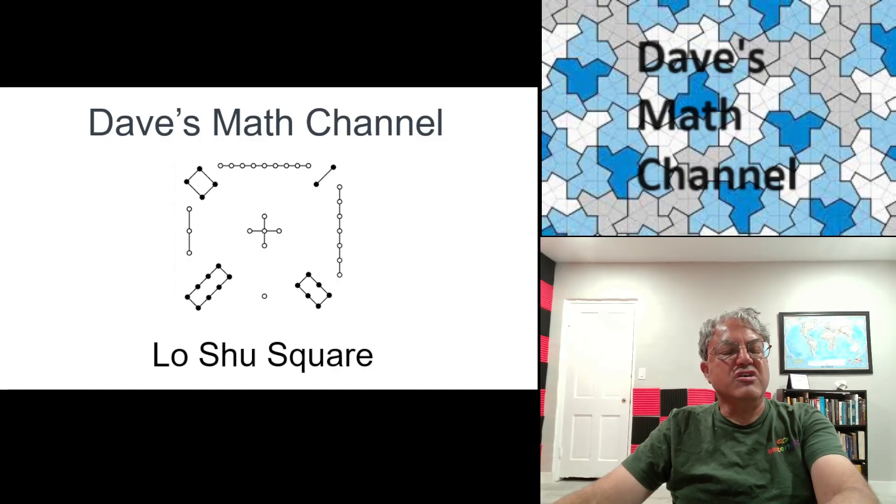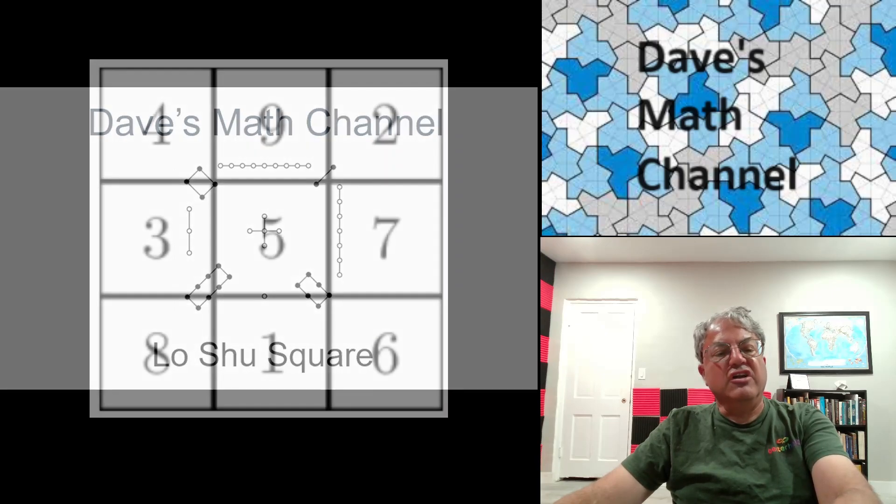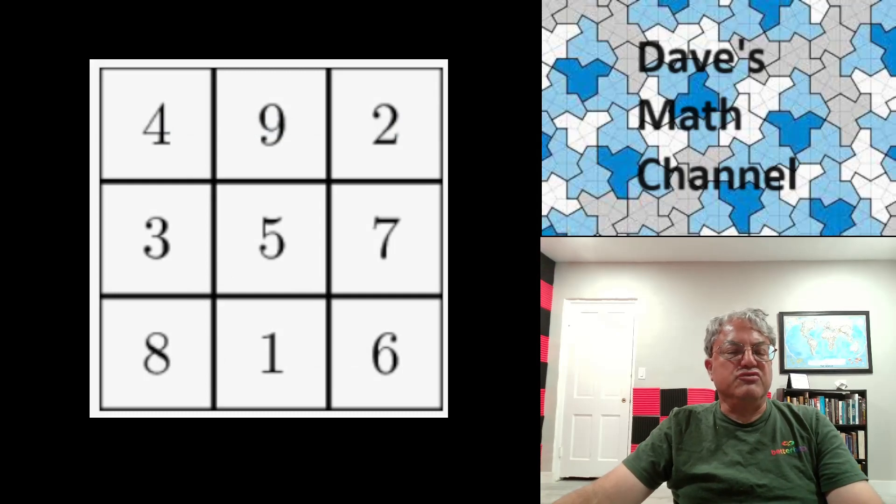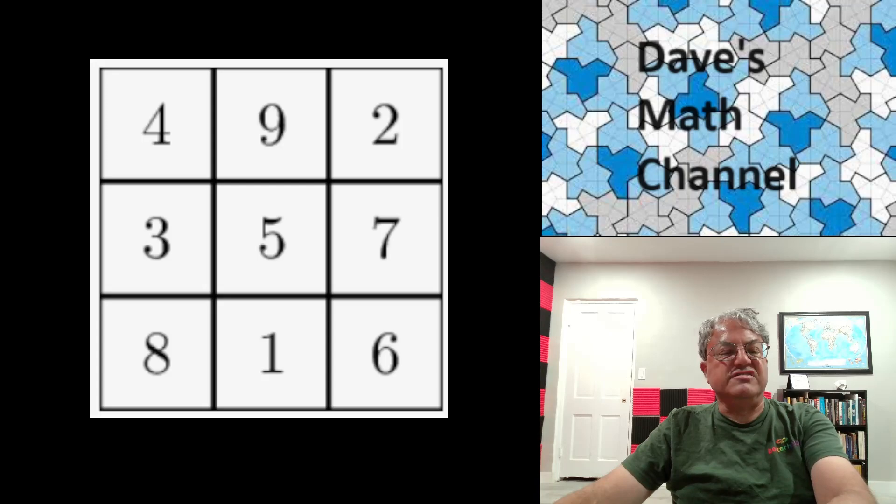So you can see, for instance, the bottom row is 8-1-6. The number in the middle is 5. But anyway, here's a more standard representation of the Lo Shu Square with Arabic numbers in it. And I'm sure you guys have all seen this at some point. And it turns out to be the unique normal Order 3 Magic Square.